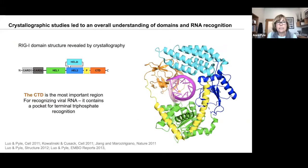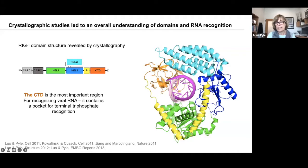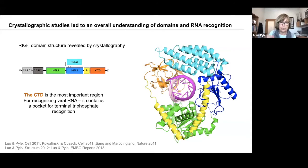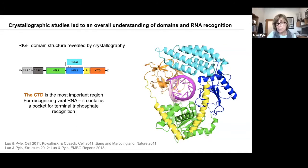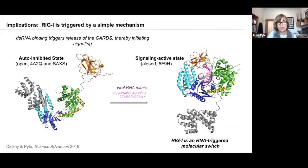A little bit about what RIG-I looks like. This was revealed by crystallographic studies from my lab and other labs, which revealed a completely novel domain architecture. It's got a couple of helicase domains, shown in green and blue, that are coupled by an interesting adapter domain that shifts around them. There's a domain that helps it recognize double-stranded RNA, but the most important domain is the gold one — the C-terminal domain that recognizes the major viral RNA determinants, like the terminal blunt diphosphate and triphosphate. It contains a pocket for recognizing ligands. This was published around 2011–2012. What we now know about RIG-I structure mainly comes from cryo-EM studies out of my lab that have not been published yet.